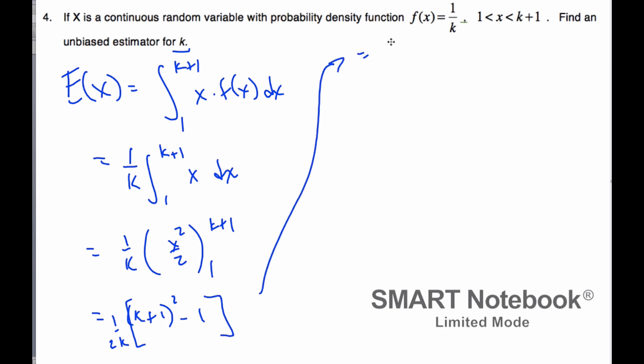Working that out, I get 1 over 2k times (k squared plus 2k), which ends up being (1/2)k plus 1. This is the expected value.